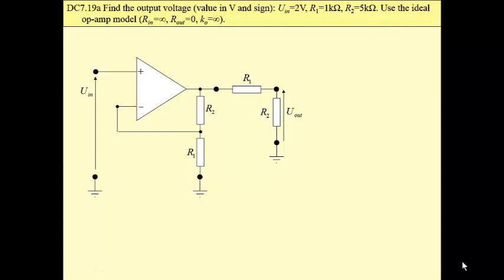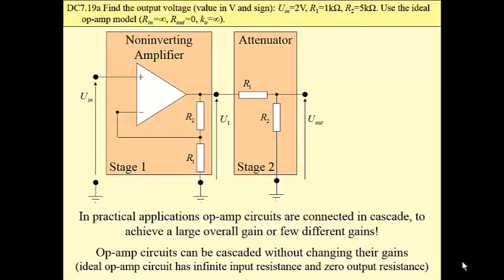We will study different configurations of op-amp circuits connected in cascade. In this problem we have two stages: a non-inverting amplifier as the first stage and then an attenuator as the second stage.